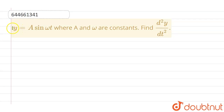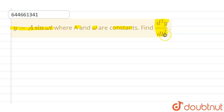Hello everyone. In this question, we are given y equals to a sine omega t, where a and omega are constants, and we have to find out the value of d²y over dt².